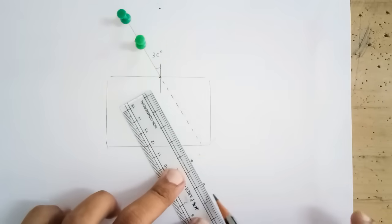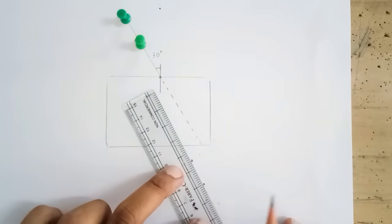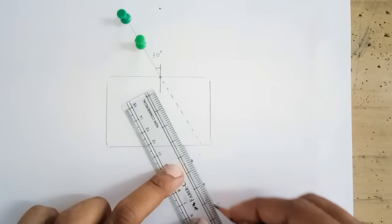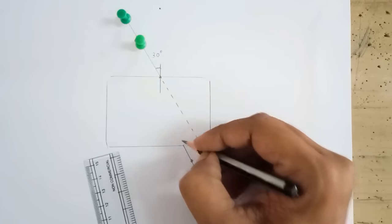Now, with the help of scale, I am going to make a straight line in such a way that these two dots are joining my marking over here like this. This would be my refracted ray.